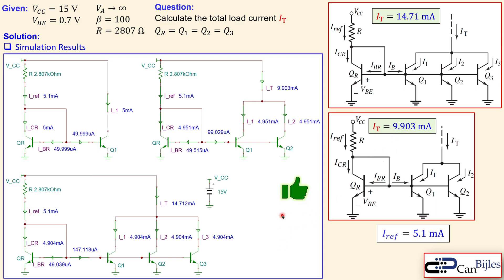You can also downscale a current by starting with a larger area reference transistor — for example, making QR six times larger — and using a unit area transistor for the load, giving a factor of six reduction. This was example number six covering current mirror upscaling. In the next videos we will continue with current mirrors using MOSFET variations and discuss similar topologies. Please leave any questions or comments below, and see you next time.